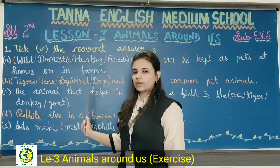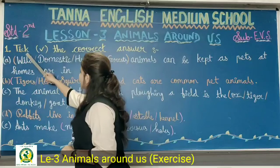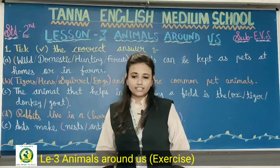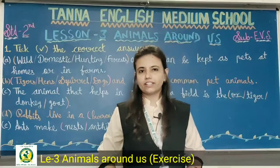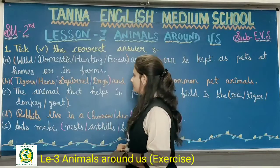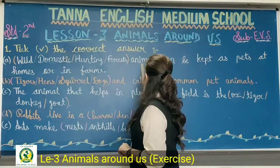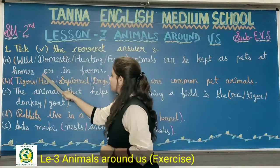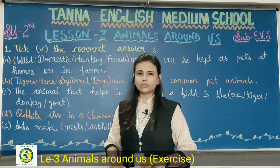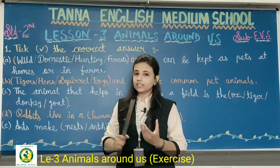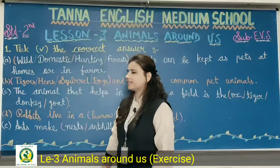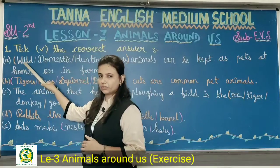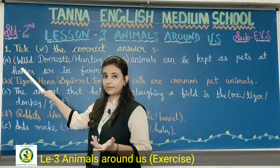Look here, question number 1: Tick the correct answer. So aaj hum kya karne wale hai students? Tick the correct answer karne wale hai. First question is: dash animals can be kept as pets at homes or in farms. Aise koun se animals hote hai? Jis ko hum as a pet apne ghar pe bhi rakh sakte hai? Or farms mein bhi rakh sakte hai? And your option is: wild? Wild animals ko hum as a pet apne ghar pe rakh sakte hai? No, never, kabhi nahi.